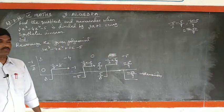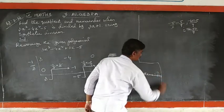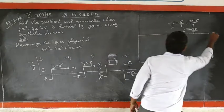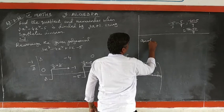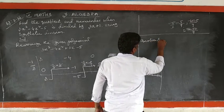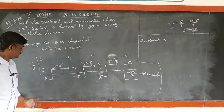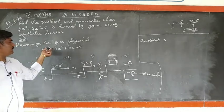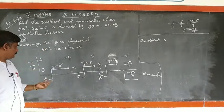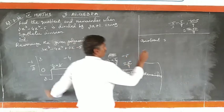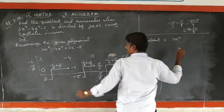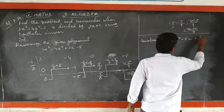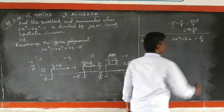Now the quotient. How do we write the quotient? The coefficients are 3, minus 5, and 5 by 3. So the quotient is written as 3x² minus 5x plus 5 by 3.